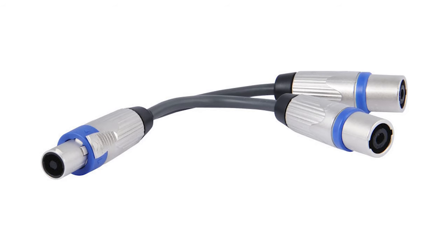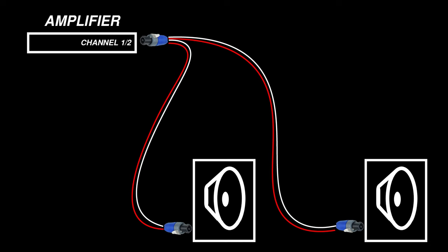You can also use breakout cables to adapt between different types of speak-on connectors. Let's say you've got one amplifier which will be powering two stage monitors. In this example, we'll say that each stage monitor has an NL2 connector and the amplifier has a single NL4 connector.